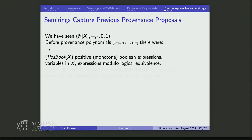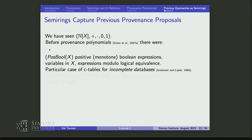You have to identify boolean expressions that are equivalent, defined by giving the same truth value for every truth assignment. This was related to very influential early work in incomplete databases called c-tables. C-tables are even more general, but if you consider c-tables where variables are used only in labeling tuples with monotone expressions, you essentially have possible relations. This early work was Imielinski-Lipski, 1984.